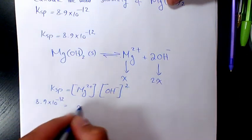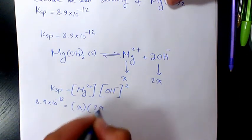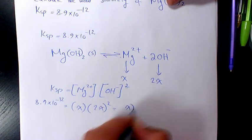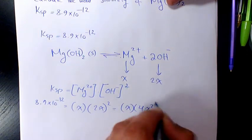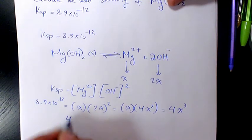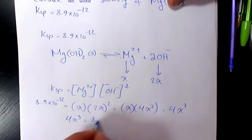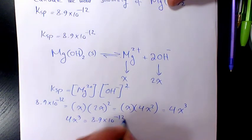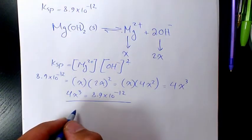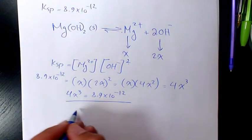x times 2x to the power of 2, which will be x times 4x squared, equals 4x cubed. So we have 4x cubed equals 8.9 times 10 to the power of negative 12. When you have it like that, x